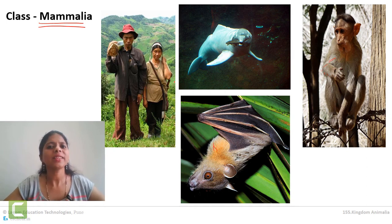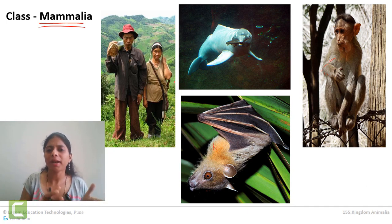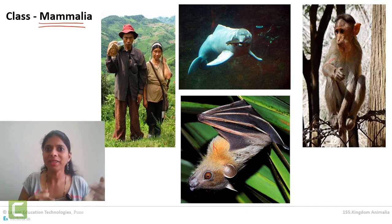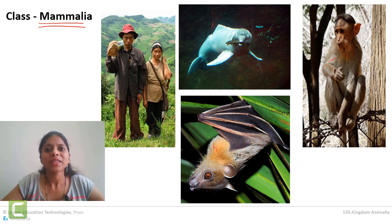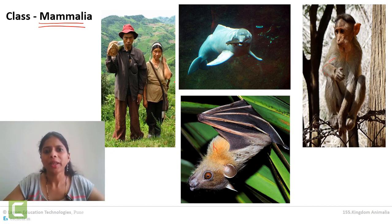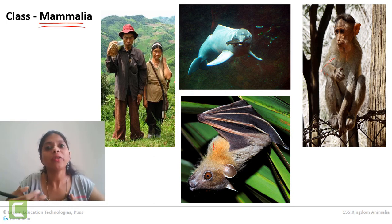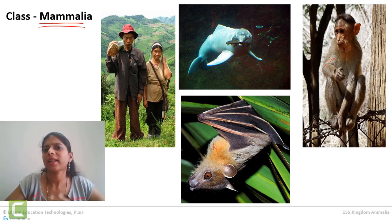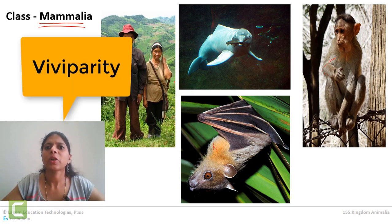Now when we go into the detailed characteristics, a few important ones make mammals different from any other animals. Most mammals give birth to the baby — there are few exceptions but generally mammals give birth. Human beings give birth, lions give birth, bats give birth, dolphins give birth. This giving birth to the baby is a very special characteristic called viviparity.